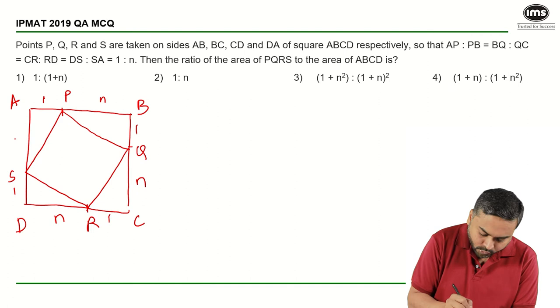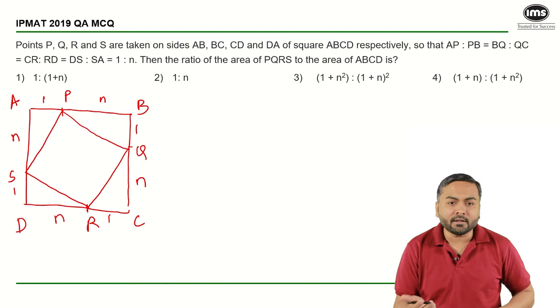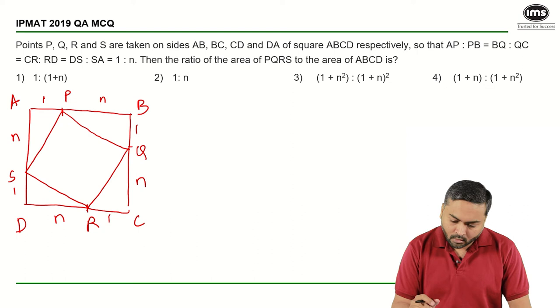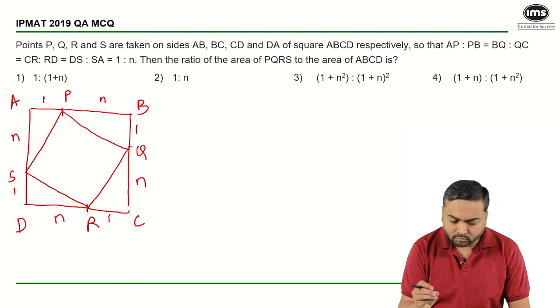There is a square ABCD and inside that I have another square PQRS. I need to find the ratio of their areas. Now, one way is to substitute the value of n, you can assume n is equal to 2 or 1, whatever you can assume any value and solve this particular question.